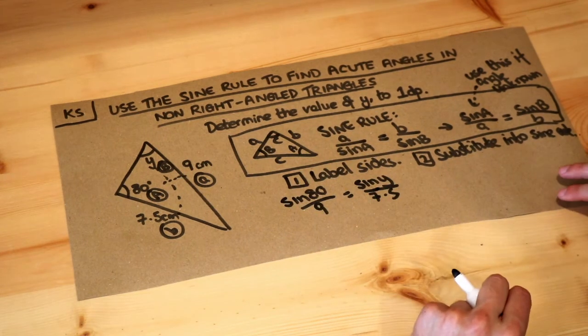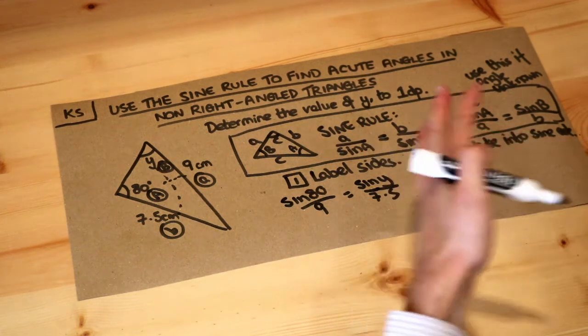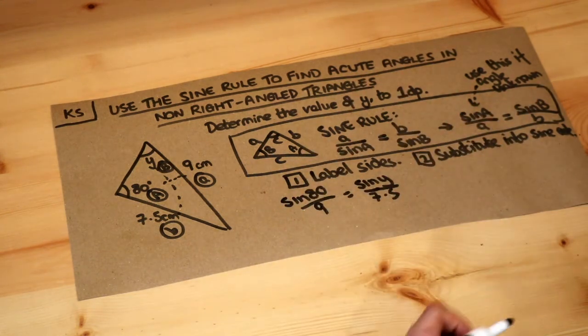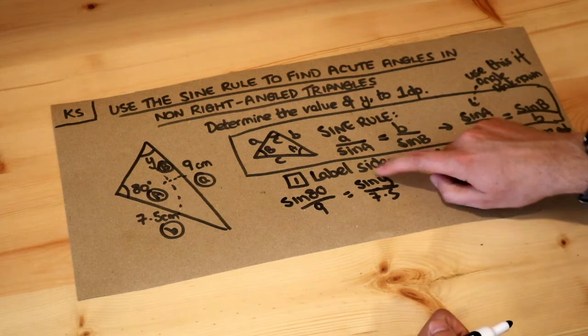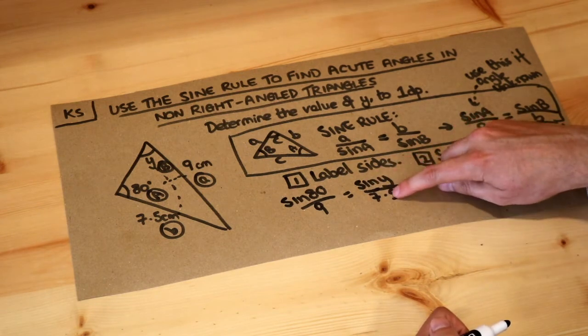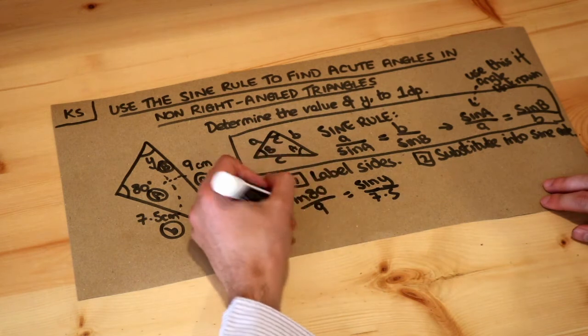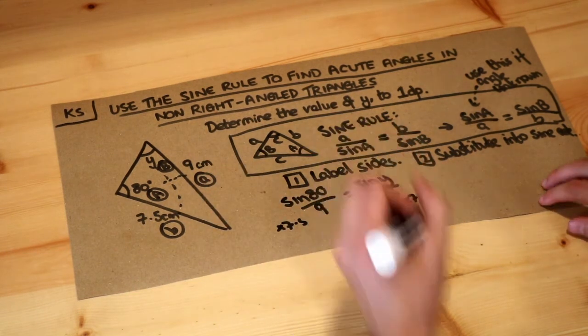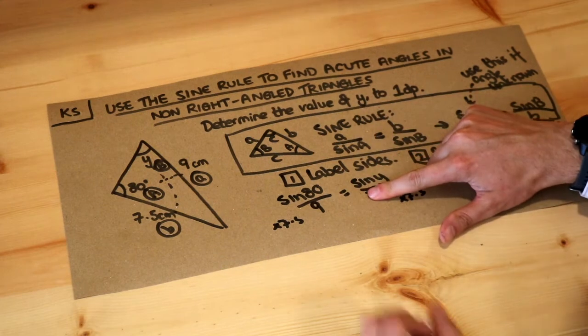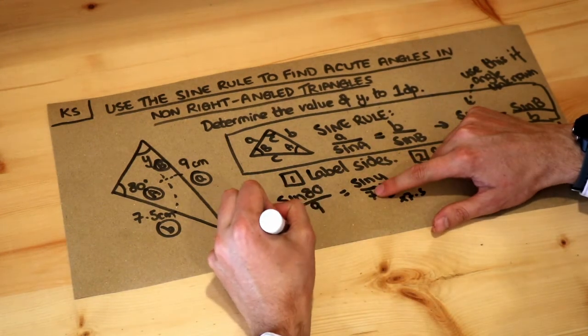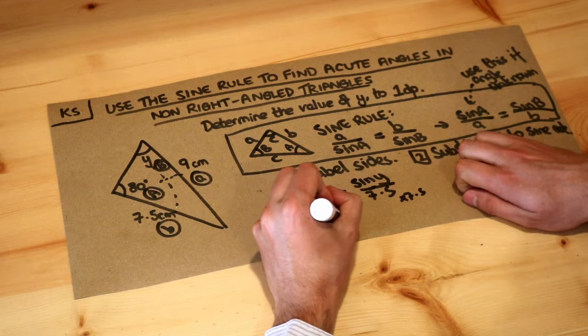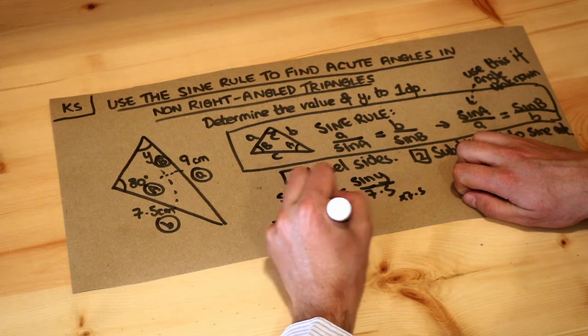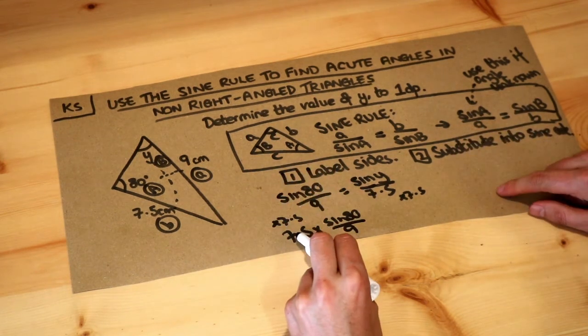And now we just need to solve this. We need to get y on its own. Well, as usual we think about what's happening around the y and then undo those things in reverse order. y was being signed and then it's been divided by 7.5, so we're going to multiply both sides of the equation by 7.5 first to get rid of the over 7.5.